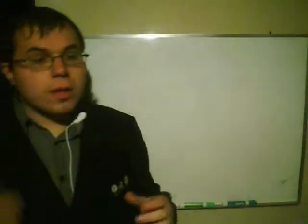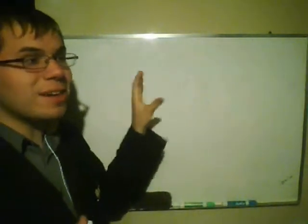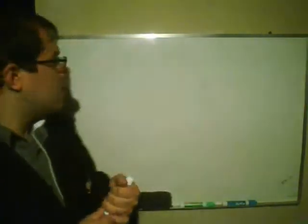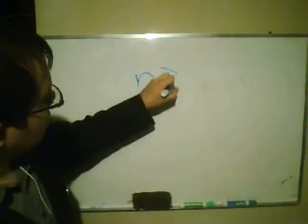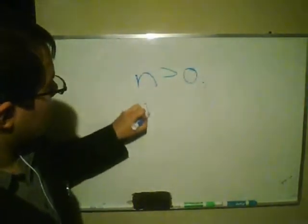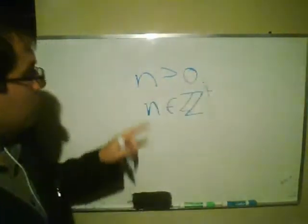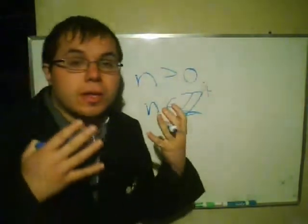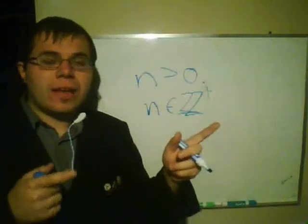First of all, in number theory, prime numbers are relatively important. If not, they're one of the most important aspects in number theory. A prime number is a number, say n, which is strictly larger than 0, because we're only dealing with positive integers, which have no other divisors except for itself and 1.